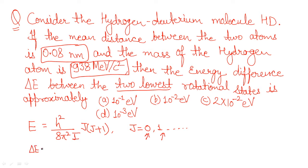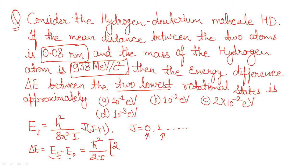So ΔE = E₁ − E₀, where the subscript represents the value of J. If you are not familiar with the rotational energy formula, you need to memorize it. We can also write the h²/(8π²I) term as ℏ²/(2I). Substituting J = 1 gives J(J+1) = 2 for E₁, and J(J+1) = 0 for E₀. So ΔE simplifies to ℏ²/I. You just need to simplify this further to get the energy difference.